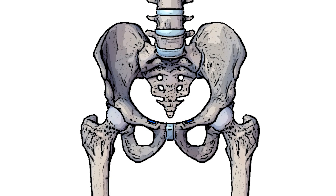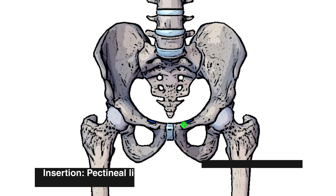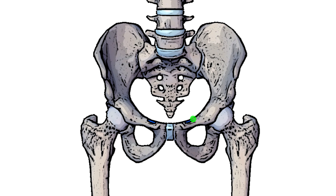Moving back to an anterior view of the pelvis, we can see the last insertion point highlighted in blue on either side. This insertion point is on the pectineal line, which is a visibly raised ridge on the superior ramus of the pubic bone.